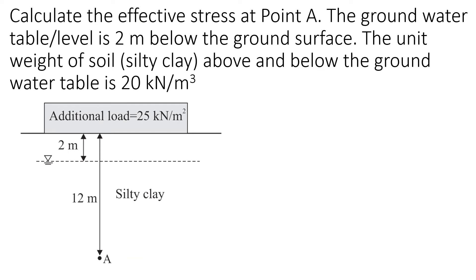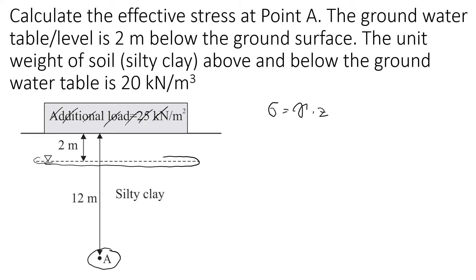Let's look at an example with an additional surface load generating 25 kN per square meter. The groundwater level is 2 meters below the ground surface, and we have silty clay. We want to estimate stresses at point A. Total stress equals unit weight multiplied by z, the depth to point A. Effective stress equals total stress minus pore water pressure.